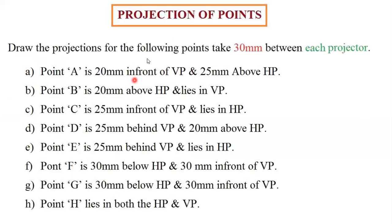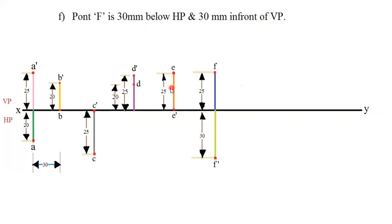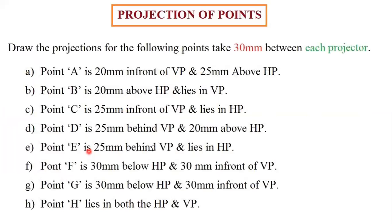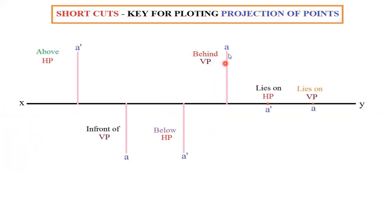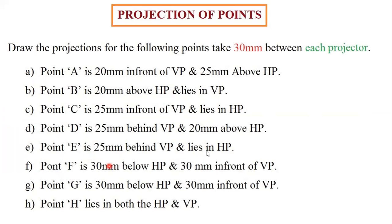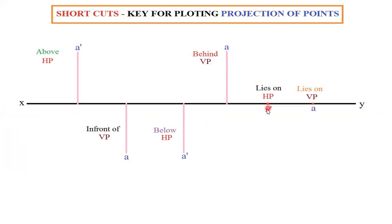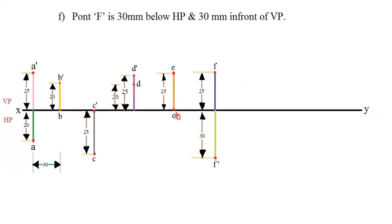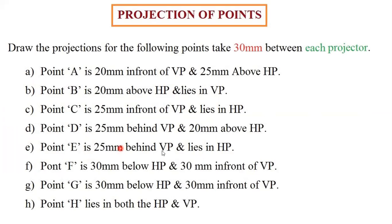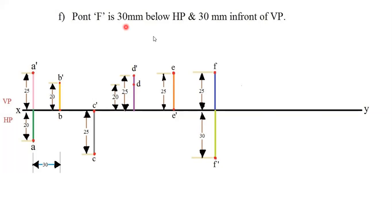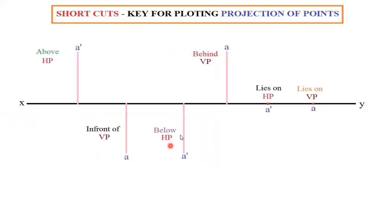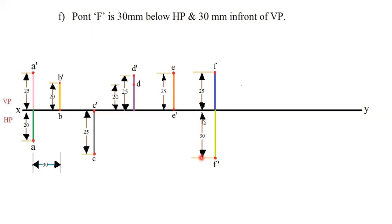Next is point E. Point E is 25 mm behind VP and lies on HP. Behind VP means you mark above the XY line. Lies on HP means you mark on the XY line itself. So point E dash will be lying on the XY line and E will be lying 25 mm above, because the question clearly states 25 mm behind VP. Next is point F. Point F is 30 mm below HP — below means downwards — so mark F dash 30 mm below the XY line. And 30 mm in front of VP — in front of VP means mark F below.